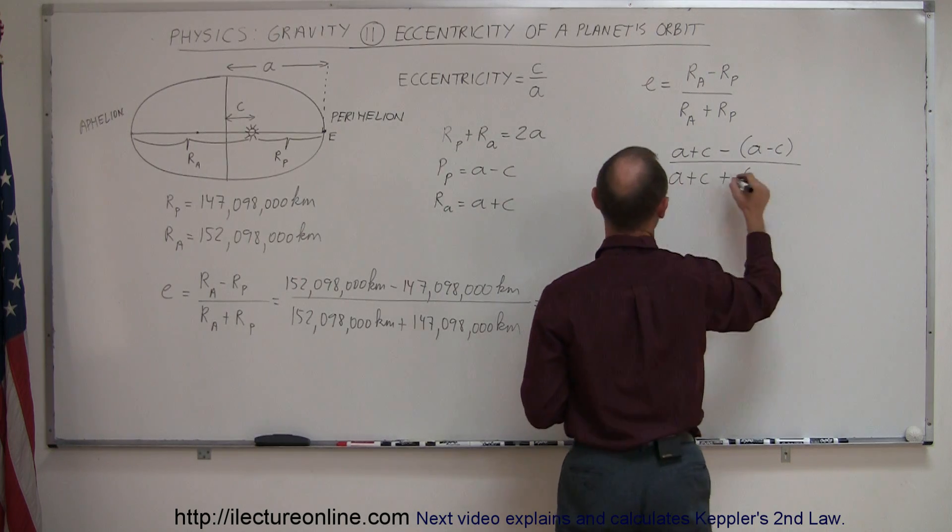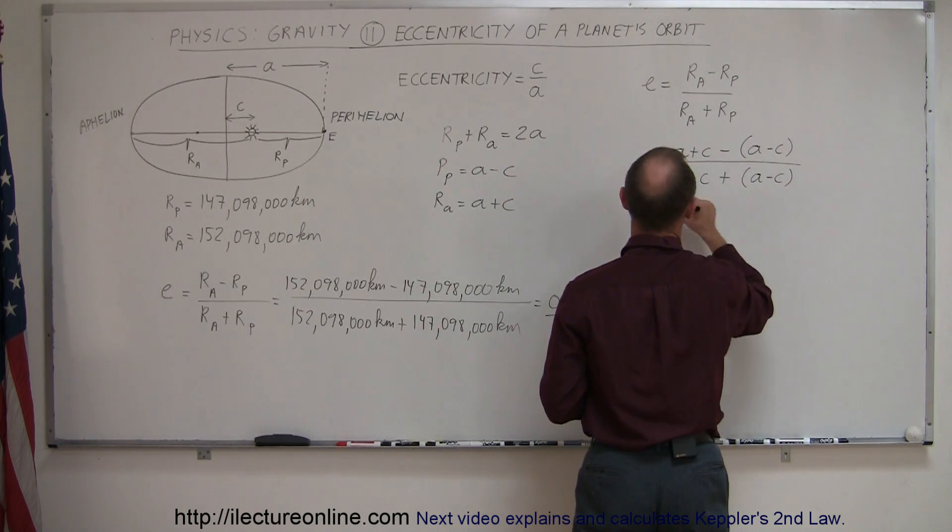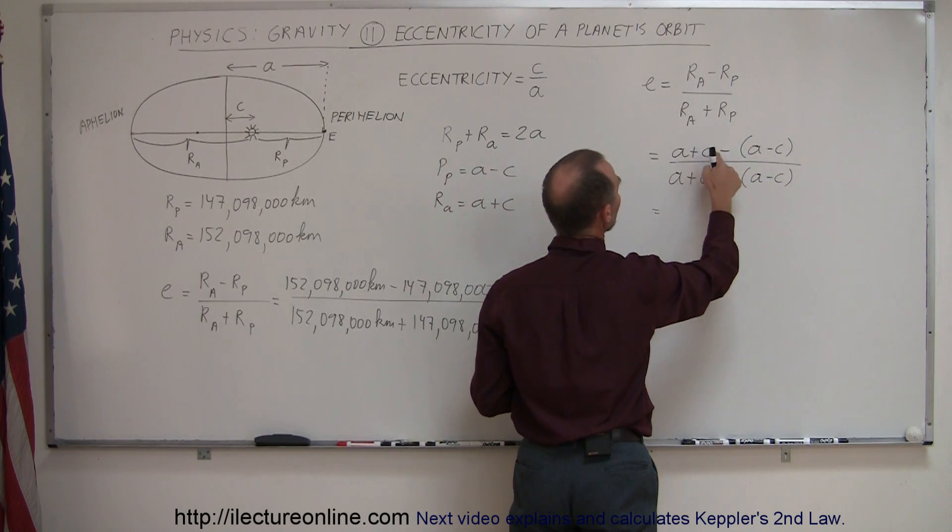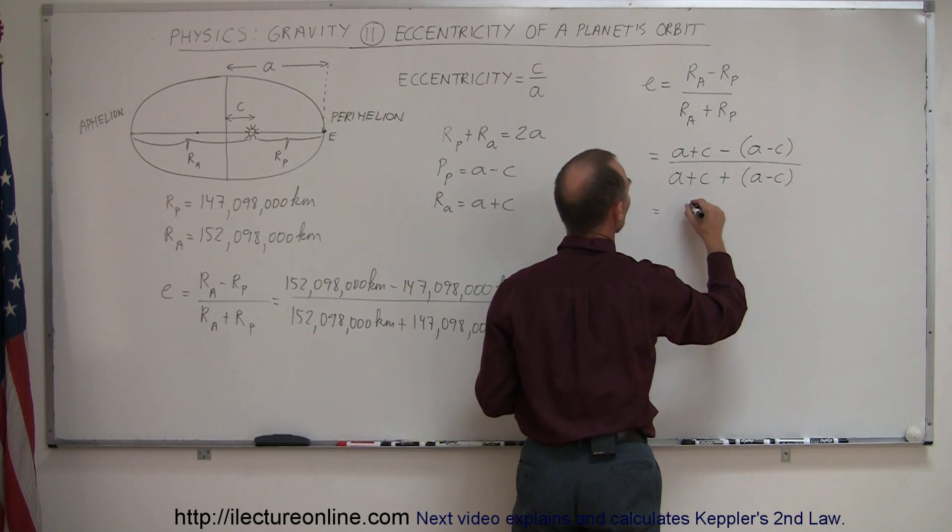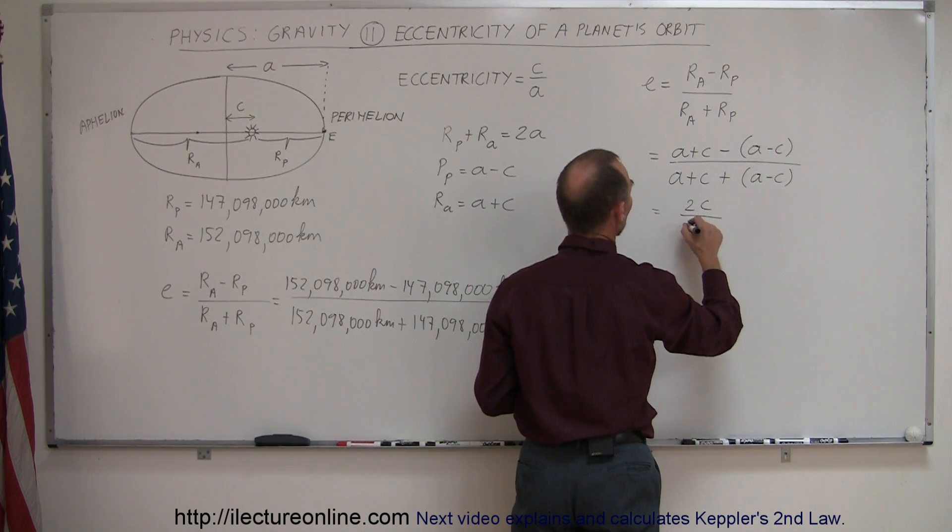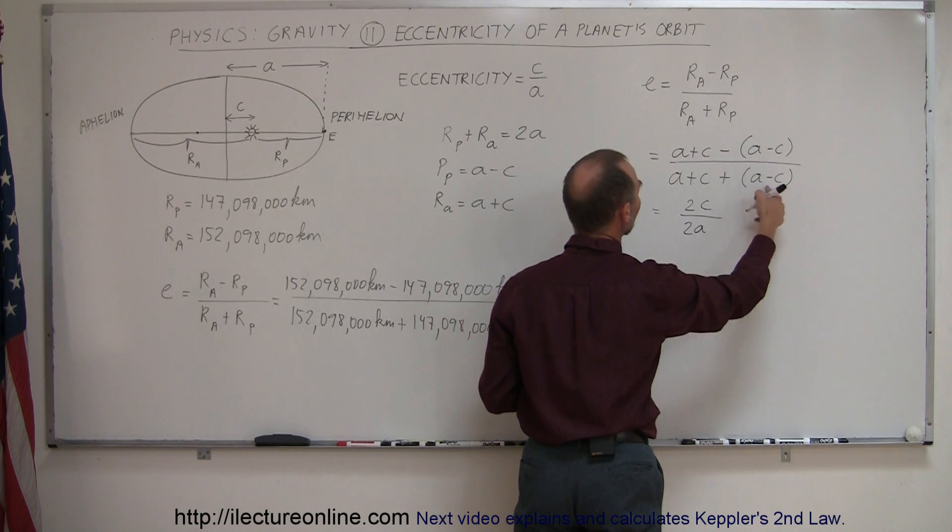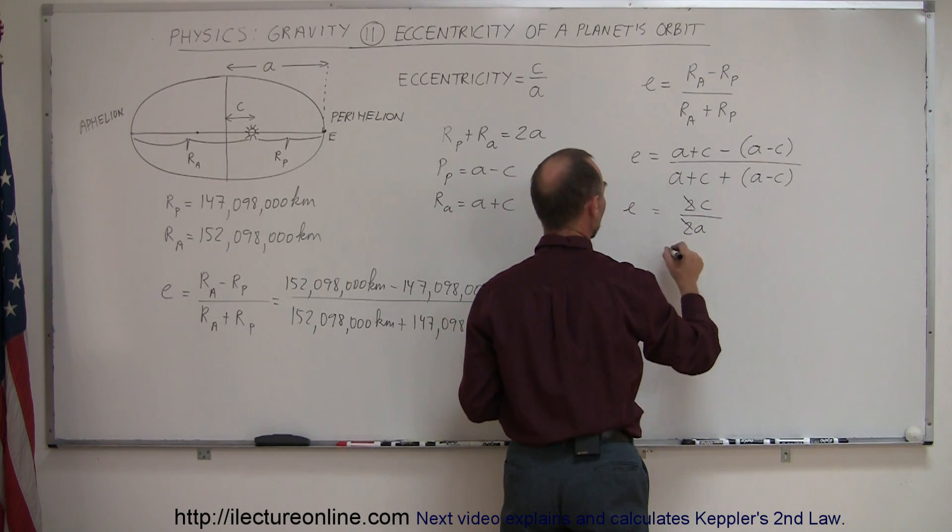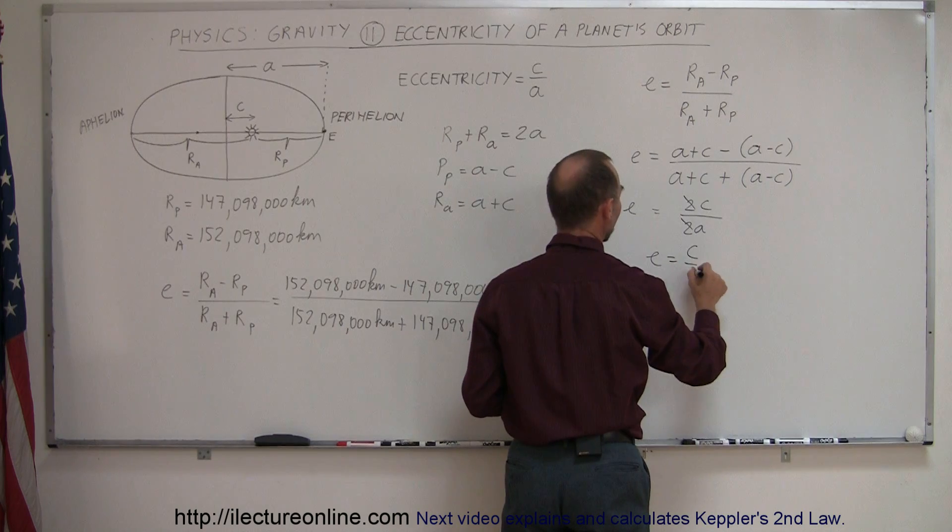Here we have A minus A that disappears, and C minus a minus C, that's C plus C. That means 2C divided by A plus A, which is 2A. And C minus C disappears. So we can see that if the 2s cancel out, e is equal to C divided by A.